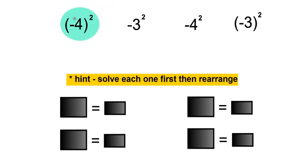In brackets, negative 4 to the power of 2 is negative 4 times negative 4, which is positive 16.